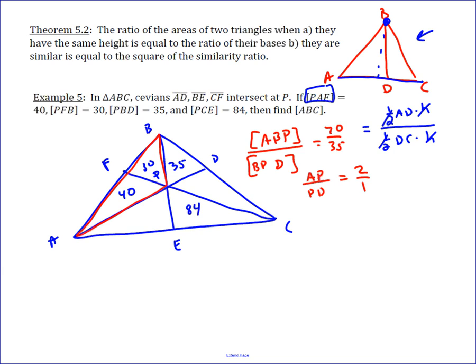For example, if you look at BFP and FPA, you get a relationship of 30, BFP is area 30, and FPA is area 40, these two, which means the ratio is 3 to 4, so that means that the ratio of BF to AF is 3 to 4.